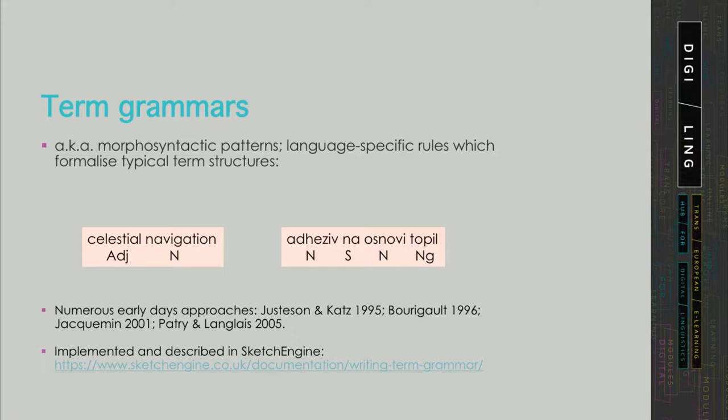Linguistically informed approaches tend to be more accurate and easy to adapt to new domains. A term grammar is a set of language-specific rules describing typical term structure such as the examples you can see here, for example, adjective plus noun is a very frequent combination for terms in English but also in many other languages.